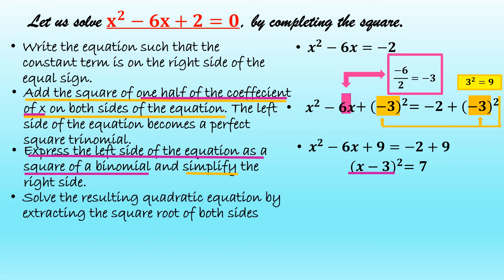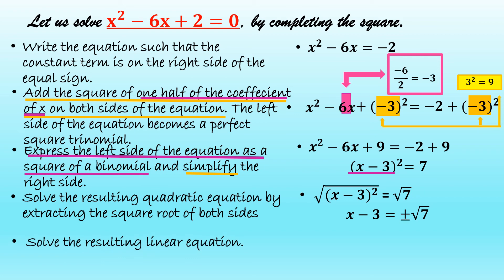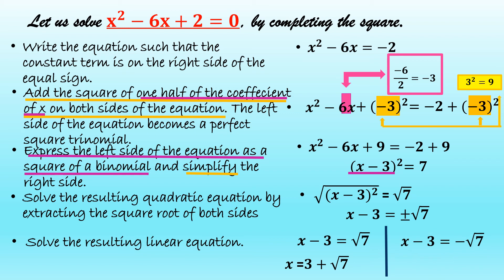Solve the resulting quadratic equation by extracting the square root of both sides. The square root of quantity x minus 3 squared is equal to the square root of 7, so x minus 3 is equal to positive or negative square root of 7. Solve the resulting linear equation. The first linear equation is x minus 3 equal to the square root of 7, giving x equal to 3 plus square root of 7. The second linear equation is x minus 3 equal to negative square root of 7, giving x equal to 3 minus the square root of 7.